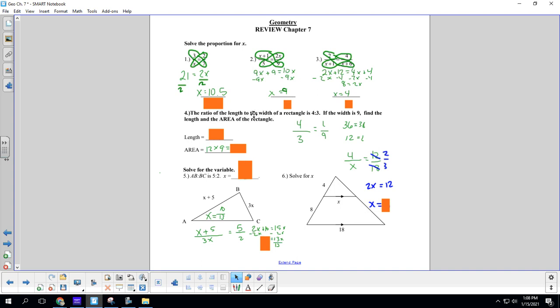Okay, the ratio of the length to the width of a rectangle is 4 to 3. If the width is 9, so length is the 4, width is the 3. If the width is 9, find the length and the area of the rectangle. So we set up this ratio as 4 over 3, length to width. We don't know the length, so we put the width of 9 on the bottom.